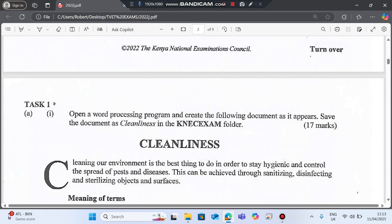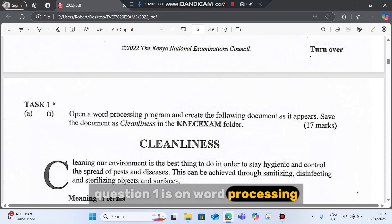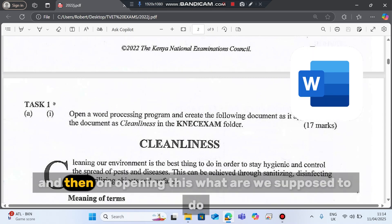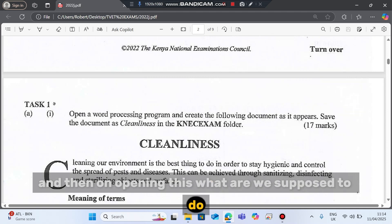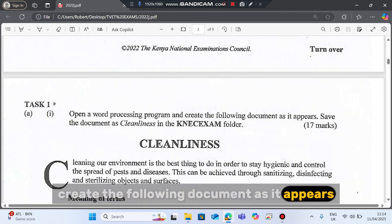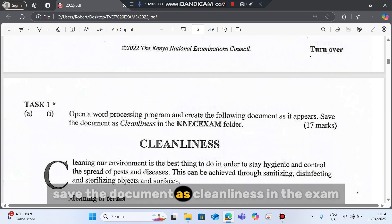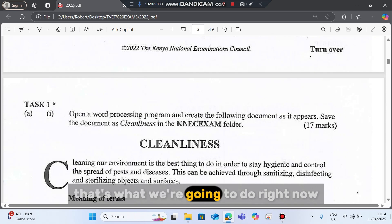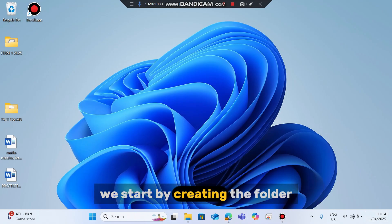Let's go to question one. Question one is on word processing, whereby we're told to open a word processing program and create the following document as it appears. Save the document as cleanliness in an exam folder. That's what we're going to do right now. We start by creating the folder.